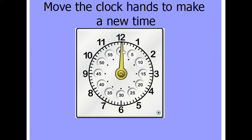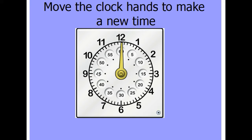The minute hand counts in a different way — it counts by fives. So if the minute hand moves to the first number it's five, and each number is indicated right under. So we have five, ten, fifteen, twenty, twenty-five, thirty, thirty-five, forty, forty-five, fifty, fifty-five, and then back to sixty. At sixty we start back again at zero.